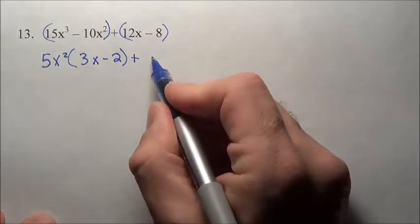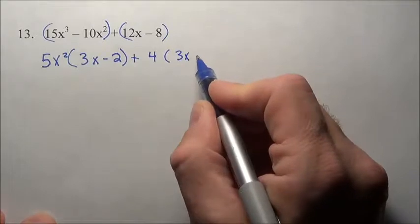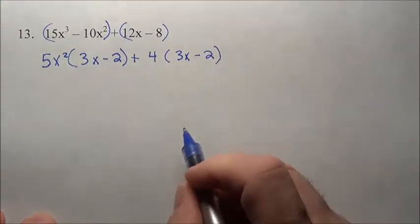Now here with 12 and 8, a 4 is the largest thing that can come out. 4 times 3X and 4 times negative 2.